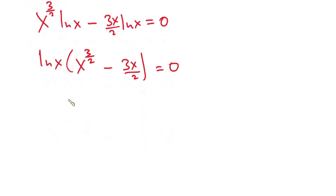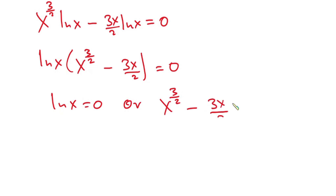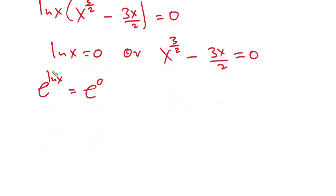From here we can say that ln(x) equals zero, or x to the power three over two minus three x over two equals zero. Solving the first equation: introducing e on both sides, e to the power ln(x) equals e to the power zero. Since they undo each other, we get x equals one, because e to the power zero is one.